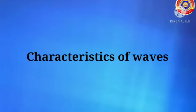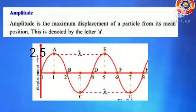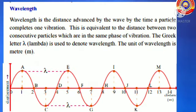Let's see the characteristics of waves. First: amplitude. Amplitude is the maximum displacement of a particle from its mean position. This is denoted by the small letter A, and here 2.5 cm is the amplitude of this wave. Next: wavelength. Wavelength is the distance advanced by the wave by the time a particle completes one vibration. This is equivalent to the distance between two consecutive particles which are in the same phase of vibration. The Greek letter lambda (λ) is used to denote wavelength, and its unit is meter.